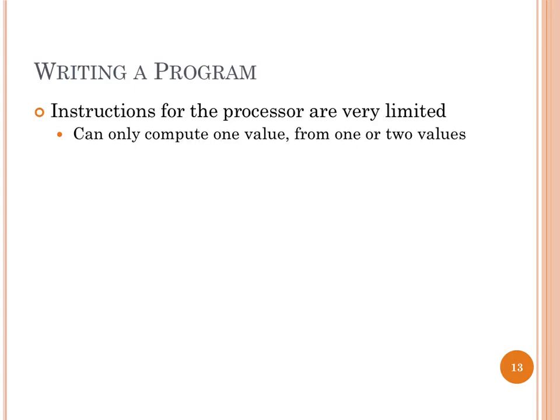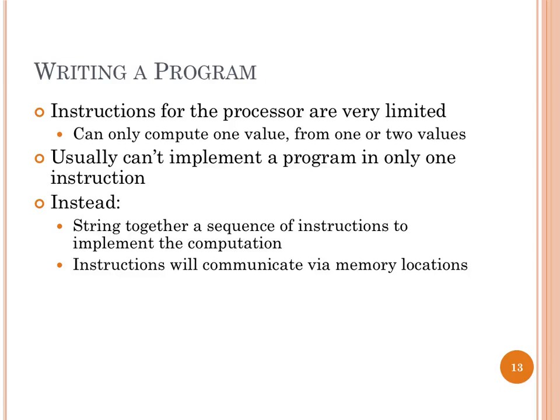The instructions for programming processors are really basic. Even on CISC processors that support fancy operations, you often can't compute an entire program in one instruction. We break computations down into a sequence of instructions that together do what we want. These instructions have to communicate through memory: one instruction stores its result at a location, and another instruction reads from that location. We build up more sophisticated computations this way.